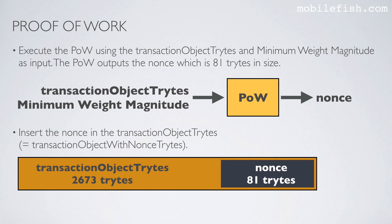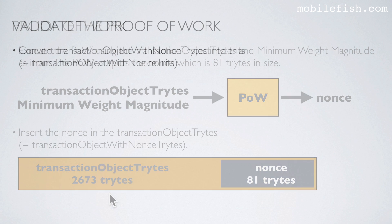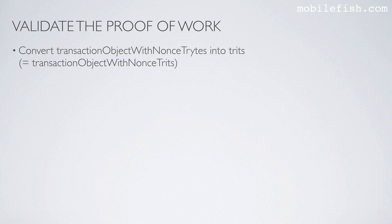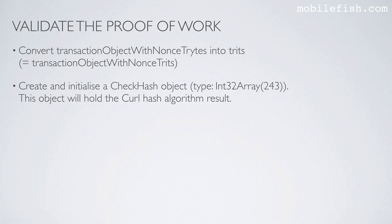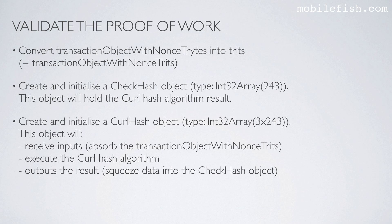Next, insert the nonce into the transaction object trits — let's call this the transaction object with nonce trits. Convert the transaction object with nonce trits into trits. Create and initialize a check hash object, which will hold the curl hash algorithm result. Create and initialize a curl hash object. This object will absorb the transaction object with nonce trits, execute the curl hash algorithm, and finally squeeze data into the check hash object.